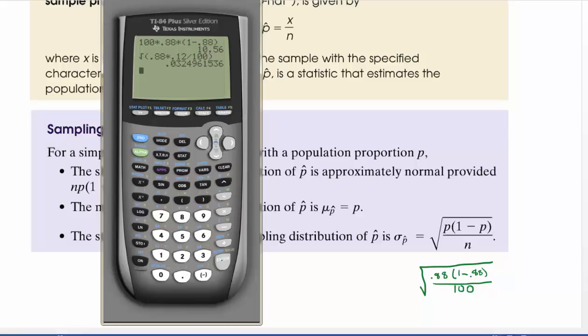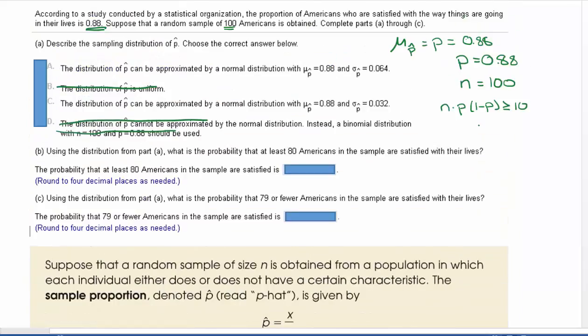We're going to do the square root of 0.88, and I'm going to shorthand it this time, times 0.12, and then divide it by 100. We're getting 0.03249 and so on. If we look at our options, we're going to go with 0.032. So our correct answer for this is going to be C.